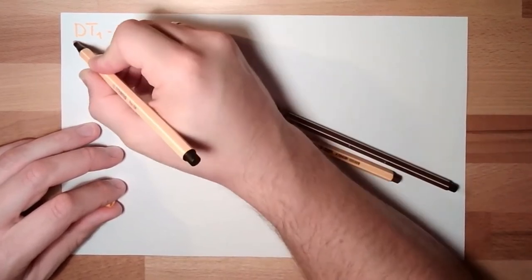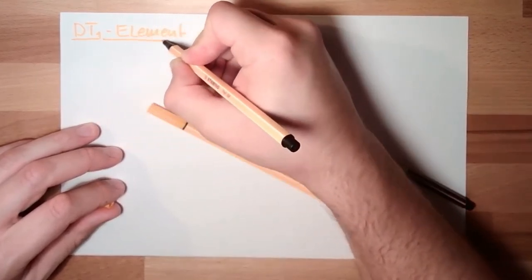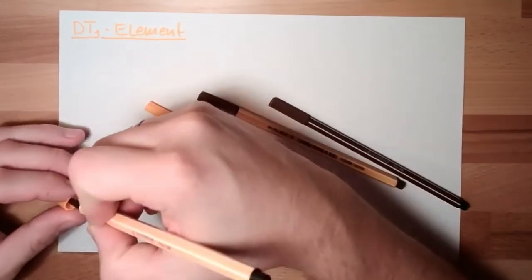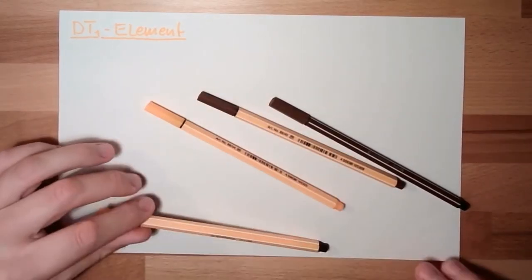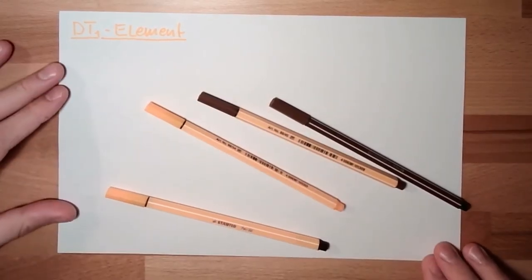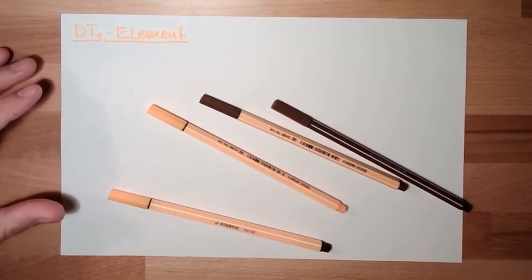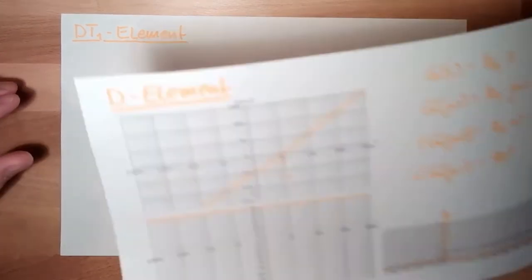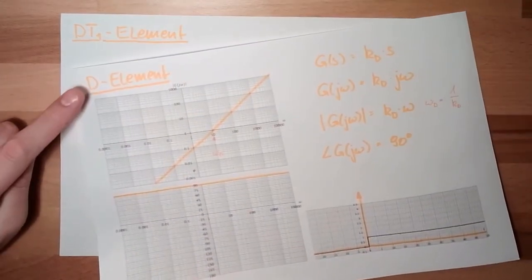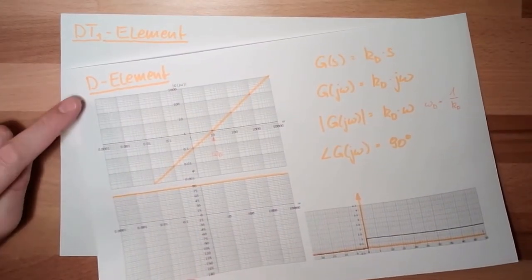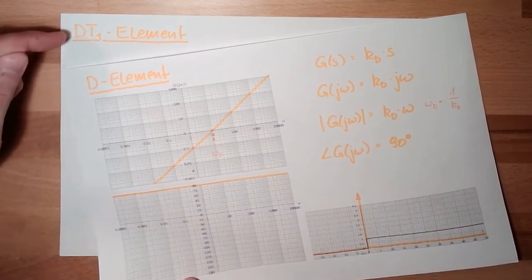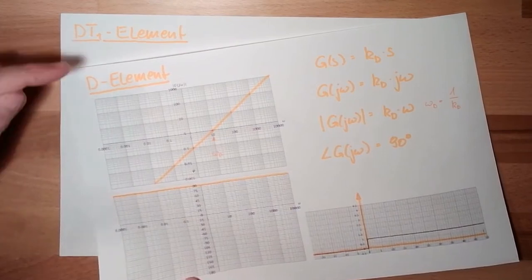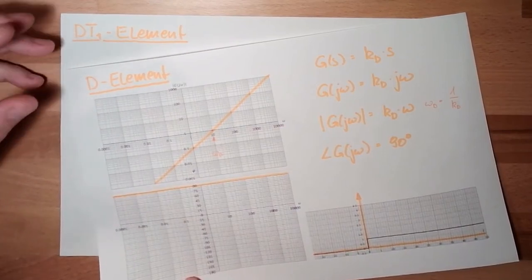The dt1 element is basically a really existing D element. As I said, the pure D element is somewhat artificial. Now we come to the D element which actually exists in reality.